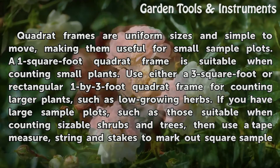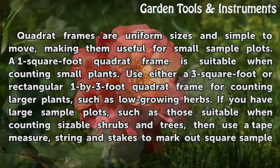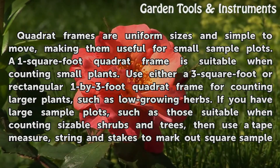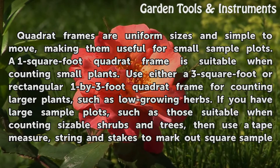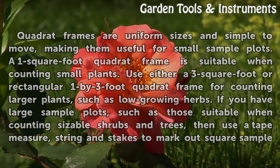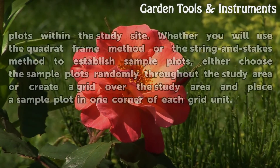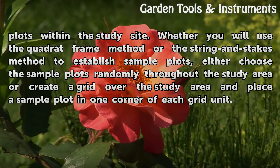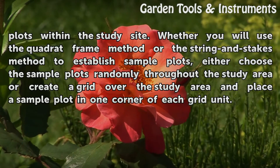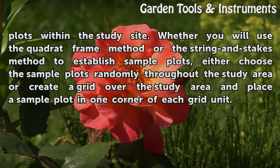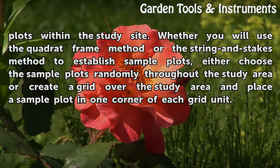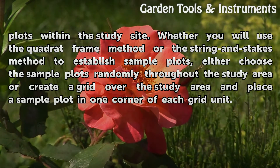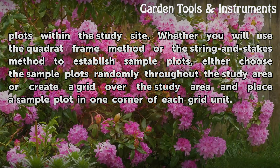If you have large sample plots, such as those suitable when counting sizable shrubs and trees, then use a tape measure, string, and stakes to mark out square sample plots within the study site. Whether you use the quadrat frame method or the string and stakes method, either choose the sample plots randomly throughout the study area or create a grid over the study area and place a sample plot in one corner of each grid unit.